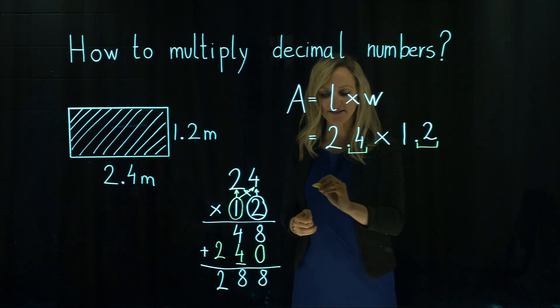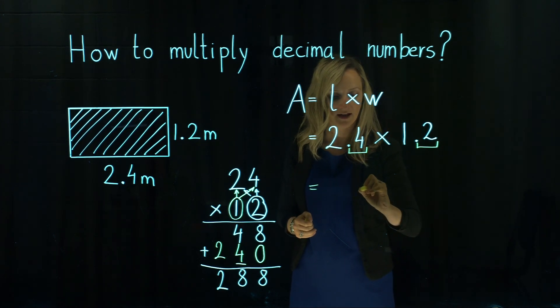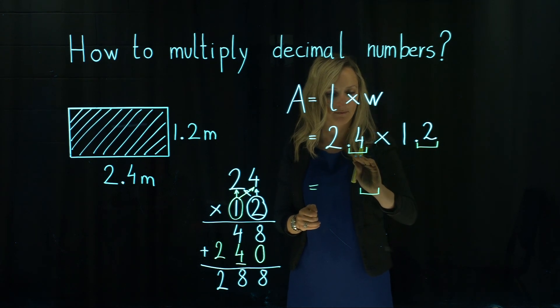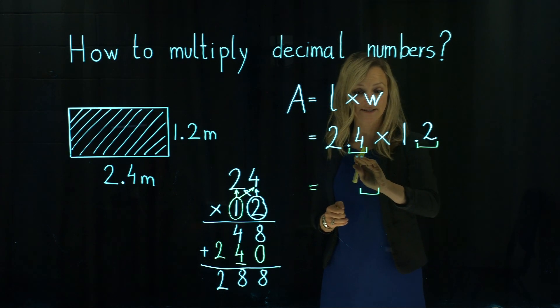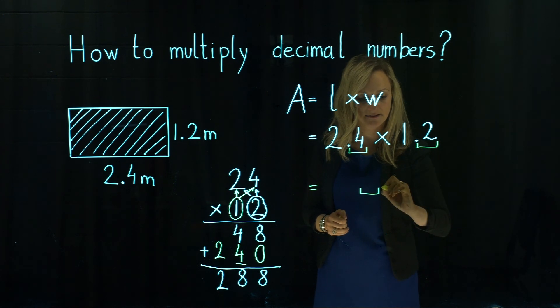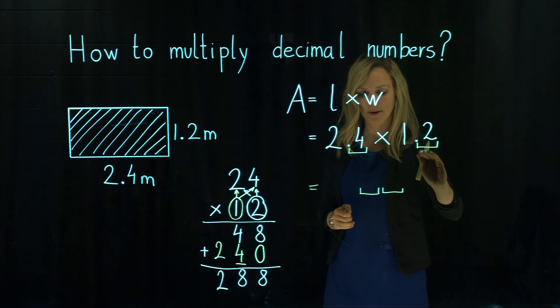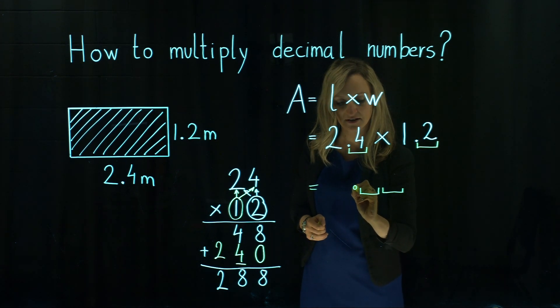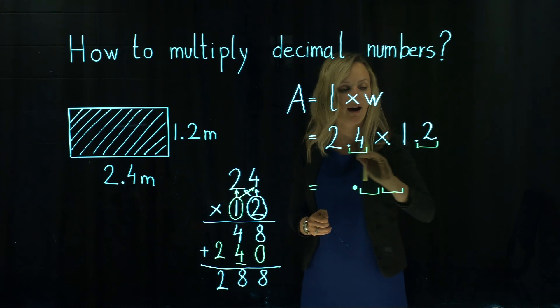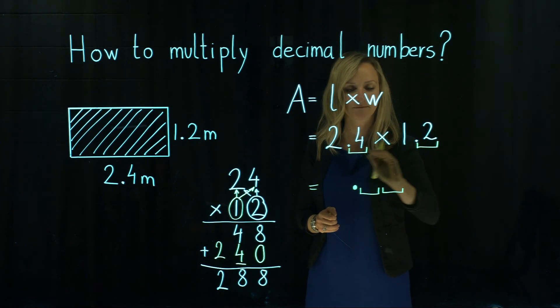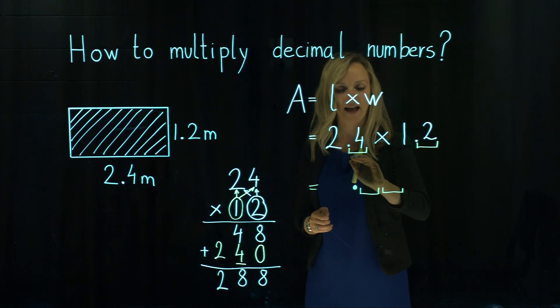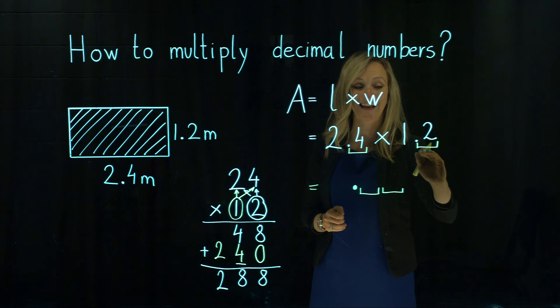After the decimal point we have one decimal place in the first number and another one in the second number. So the answer is going to have the combined amount of decimal places from the first and second number together.